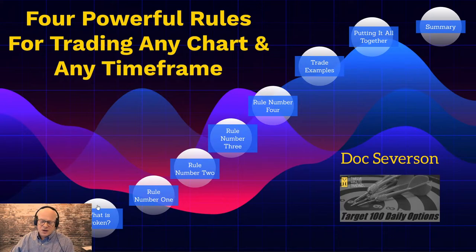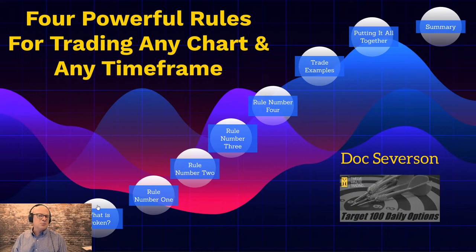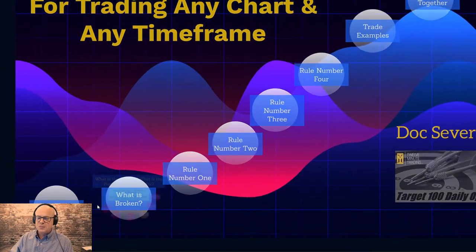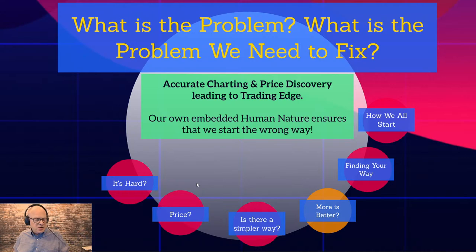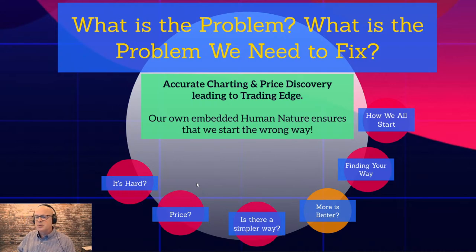Being a former engineer, I try to start by understanding what the problem is — because that's what engineers do: they fix problems. So what's broken? Accurate charting and price discovery leading to trading edge. Just looking at a chart doesn't necessarily mean you'll have any trading edge beyond 50% — a coin flip. Our own embedded human nature ensures that we start out the wrong way.